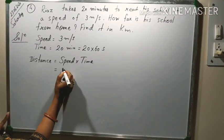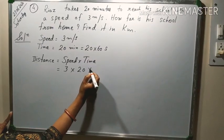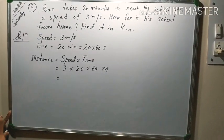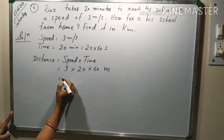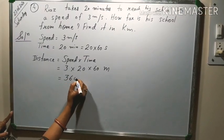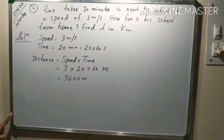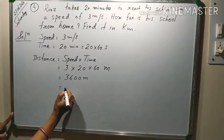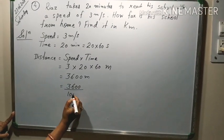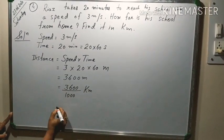Speed is given 3, time is 20 into 60. It will come in meter. So, it is coming how much? 20 into 60, 3600 meter. But we have to find out in kilometer. So, we will convert it into kilometer. We will divide it by 1000 and it will be now in kilometer.